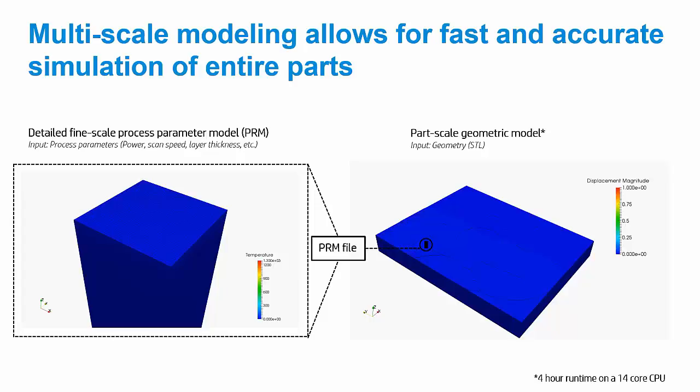The first scale that we have is a small-scale detailed scale. This piece of material is a millimeter by a millimeter. And what we're going to do at the small scale is we're going to take a material and we're going to run a moving source simulation using a set of machine process parameters like your power, scan speed, layer thickness, et cetera.